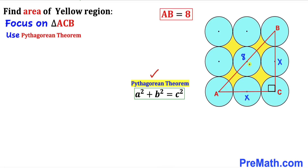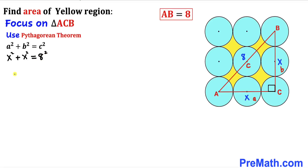Let me call the longest side our side c, and the two equal legs side a and side b. Filling in the Pythagorean formula: a is x and b is x, so x squared plus x squared equals 8 squared. Simplifying the left-hand side, we get 2x squared equals 64. Dividing both sides by 2, x squared turns out to be 32.